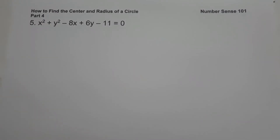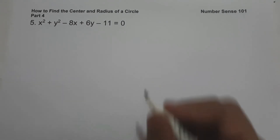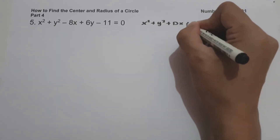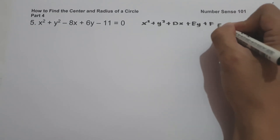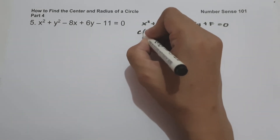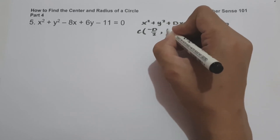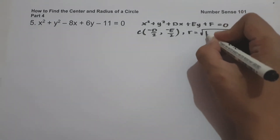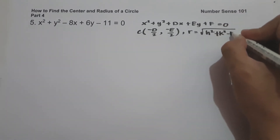On example number 5, we have x squared plus y squared minus 8x plus 6y minus 11 equals 0. There are two different solutions to find the center and radius. The first one is by using the formula: the center is (negative d over 2, negative e over 2), and the radius is square root of h squared plus k squared minus f.